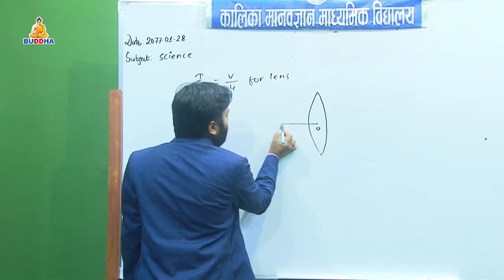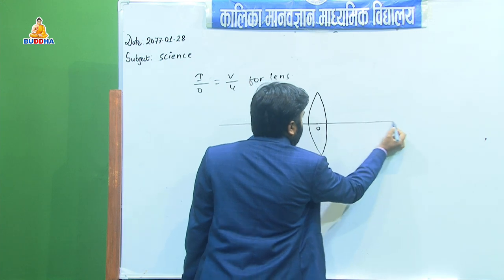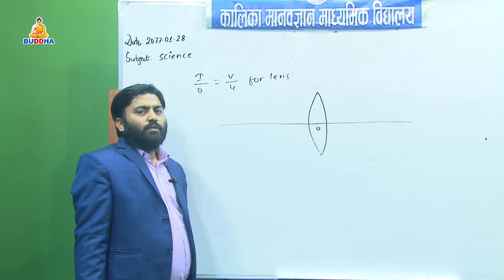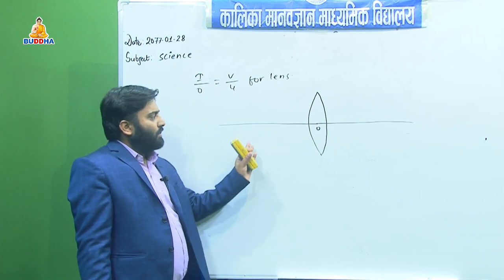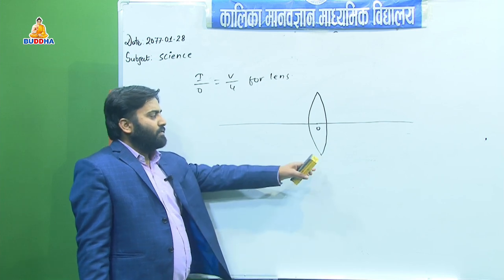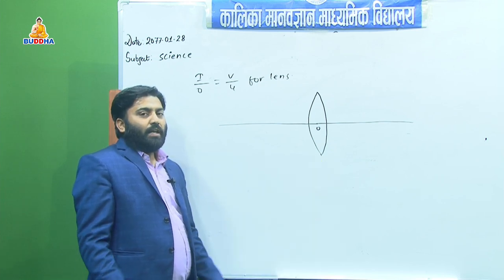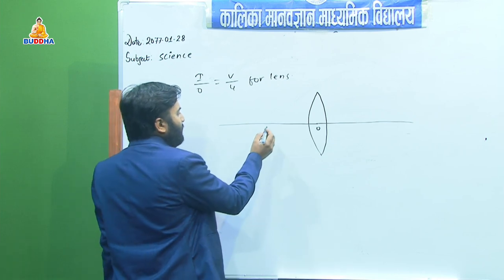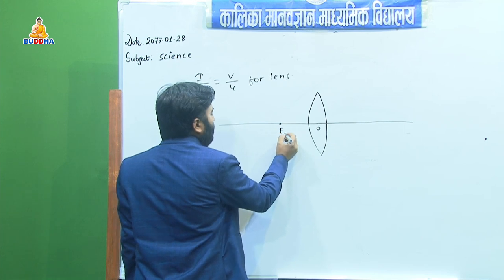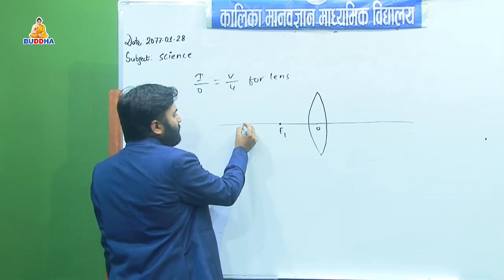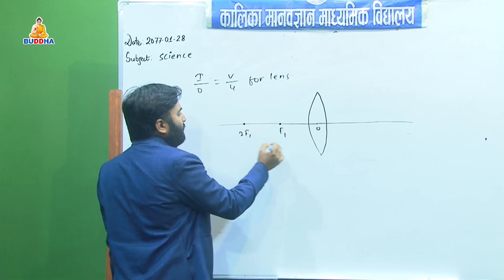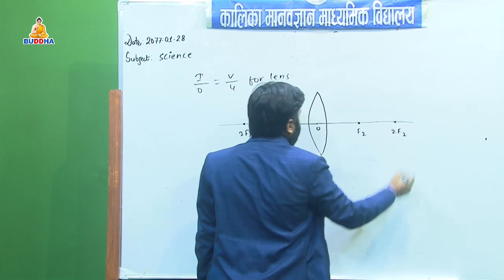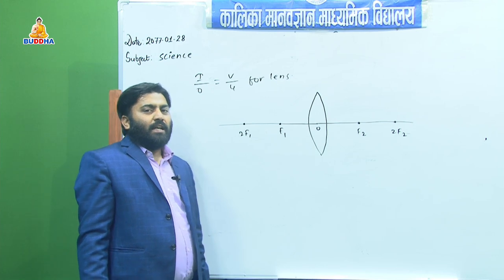The principal axis passes through the optical centre, which is the geometrical centre of the lens. The line passes through the optical centre by joining the two centres of curvature — the centres of the spherical surfaces. A convex lens is formed by the overlapping of two spherical surfaces. In the figure we mark F, 2F, F2, and 2F2.